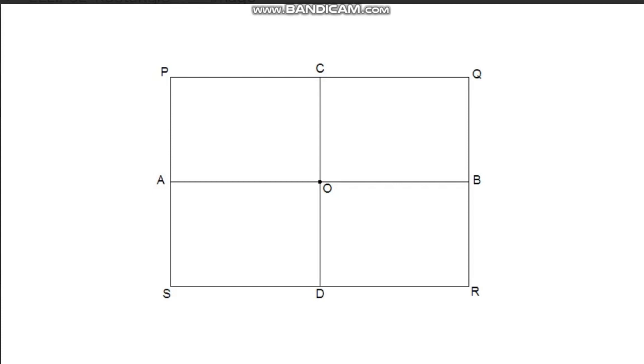Divide the line AP into equal number of parts. For our case, we will divide it into 4 equal parts. Draw a line through A by making an angle with the line AP. Mark 4 equal divisions on this line.